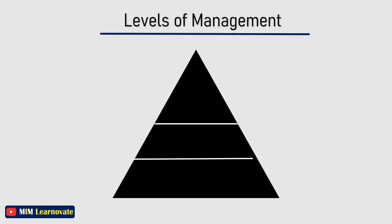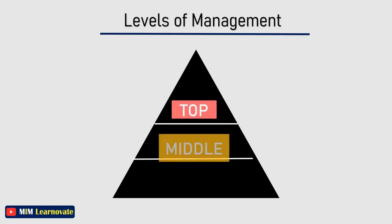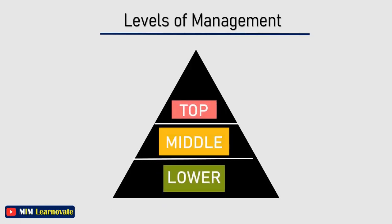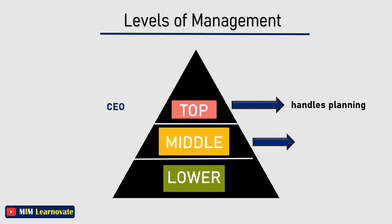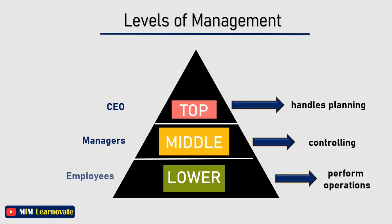There are three levels of management: top level management, middle level management and lower level management. Top level management handles planning, done by the CEO of the company. Middle level management implements planning, which comes under controlling, done by middle managers. Lower level management performs operations, done by employees or lower level managers.